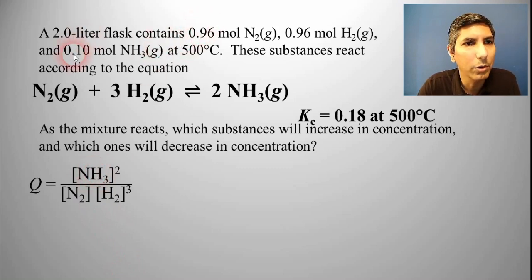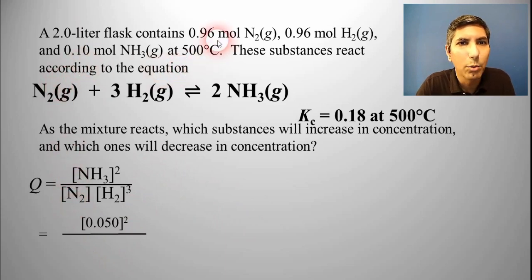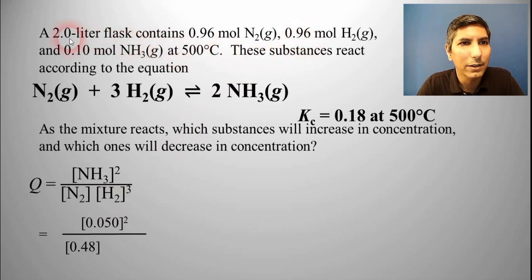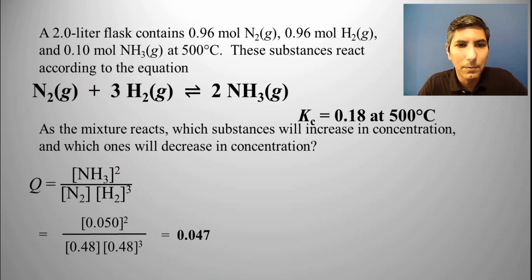Ammonia is 0.10 moles divided by 2 liters, giving 0.05 molar, and that has to be squared. In the denominator, nitrogen is 0.96 moles divided by 2 liters, which is 0.48 molar. Hydrogen is also 0.96 moles divided by 2 liters, giving 0.48 molar, but it's cubed because there's a coefficient of 3. When you compute this in your calculator, you find that Q equals 0.047.